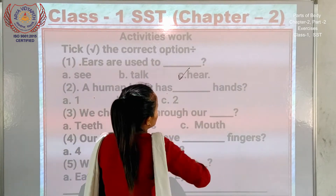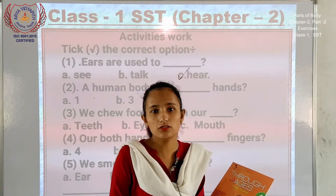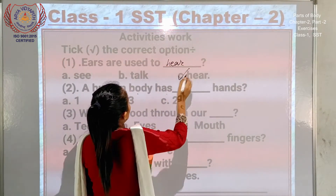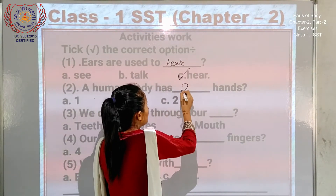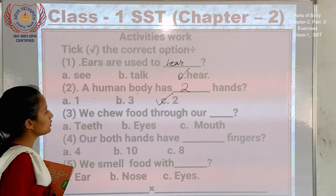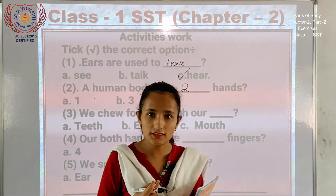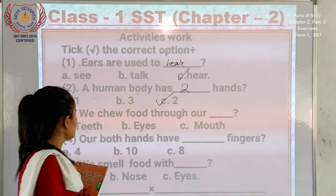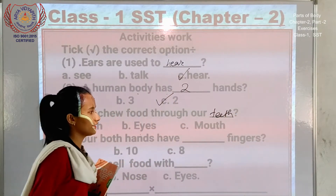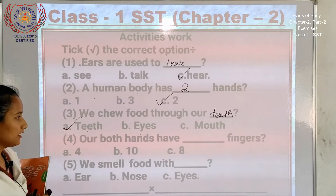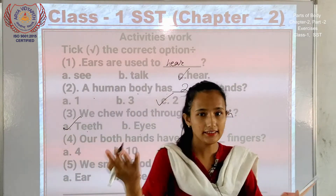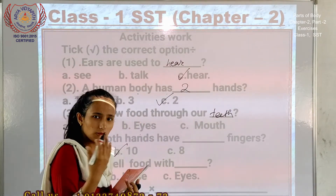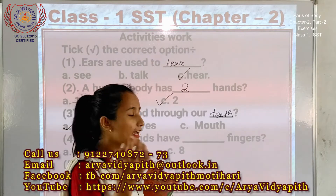Human body has how many hands — hum loko ke paas kitne haath hain? We have two hands. We chew food through our — how do we chew? Teeth. Both hands have fingers — five and five — so both hands together: we have ten fingers.